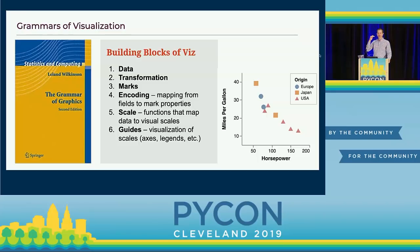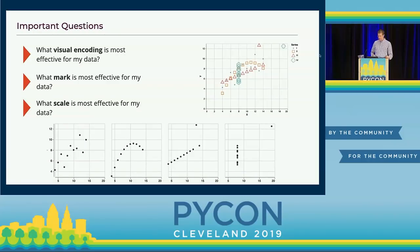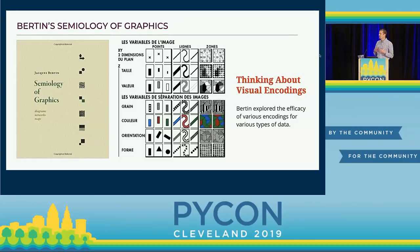Wilkinson lays out that when you create a chart, the grammar starts with the data, then some transformation of the data, then the marks — whether a point, line, bar, or multiple shapes — then the encoding, which could be x position, y position, color, shape, or size, and then the scale, which tells the reader what the encoding means. For example, we have labels on the x-axis and y-axis, and a legend that maps shape and color to values of interest. So the question is: what visual encoding, what mark, and what scale will be most effective for my data?